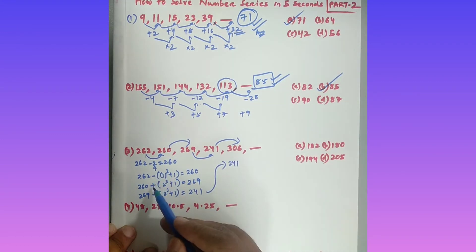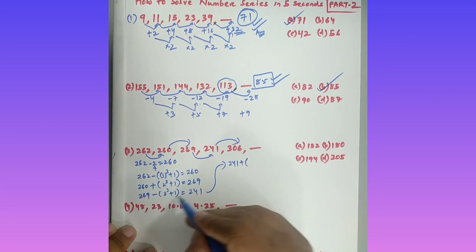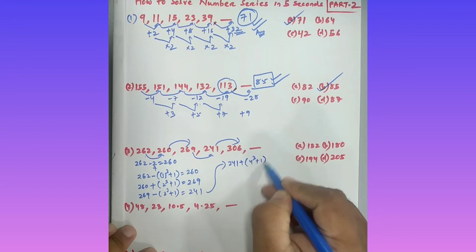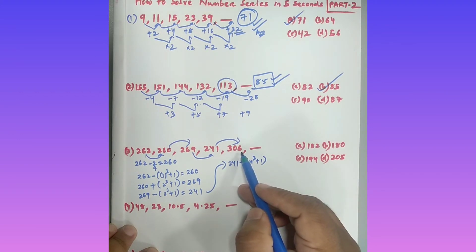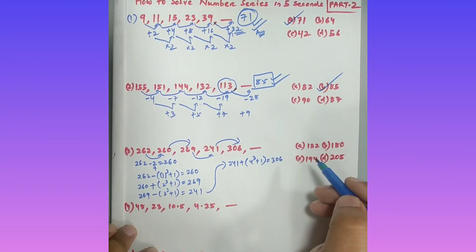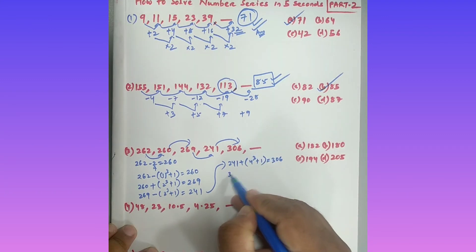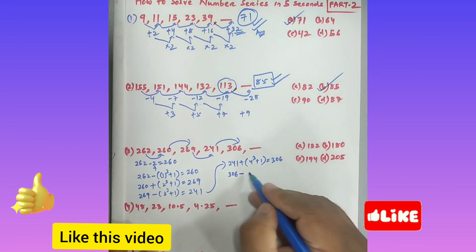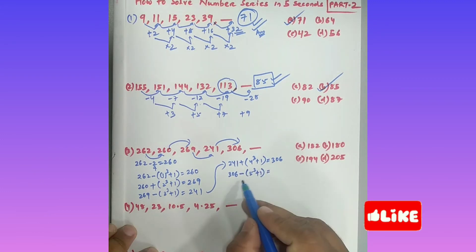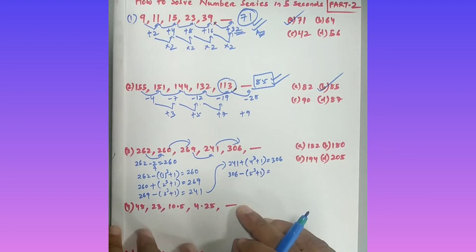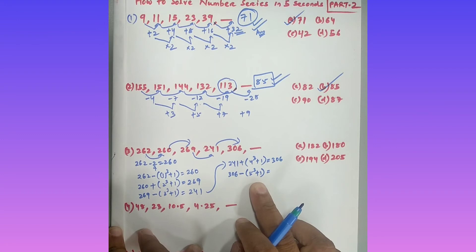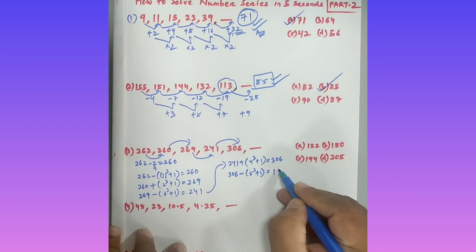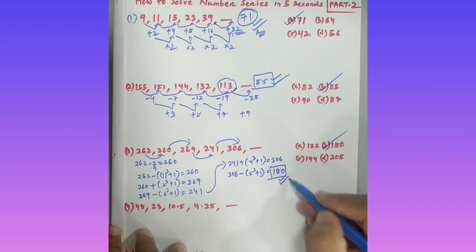The pattern alternates minus, plus, minus, plus. So 241 plus (4³ + 1): 4³=64 and 64+1=65, so 241 plus 65 equals 306 — correct. The next term follows minus, so 306 minus (5³ + 1): 5³=125 and 125+1=126, so 306 minus 126 equals 180. The answer is 180.